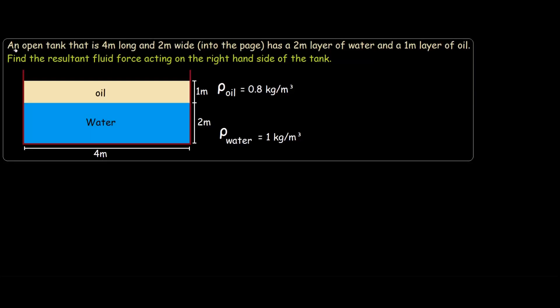We have this fluid problem where we have an open tank that is 4m long and 2m wide. This 2m is into the page and we also know that the tank is filled with two substances. One is a 2m layer of water and the other one is a 1m layer of oil. The question is asking us to find the resultant force on the right hand side of the tank acting from both fluids, the oil and the water. We are only given two pieces of information regarding the substances which is the density of oil 0.8 and the density of water 1 kg per m³.